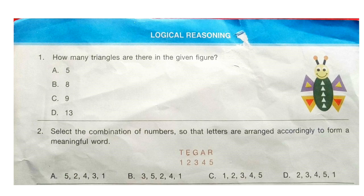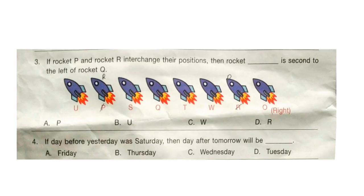G, R, E, A, T. Question 3: If rocket P and rocket R interchange their positions, then rocket dash is second to the left of rocket Q. The correct answer is option D — R, second to the left of rocket R.